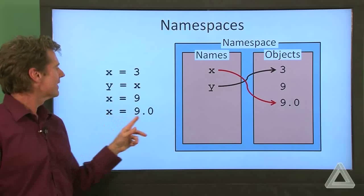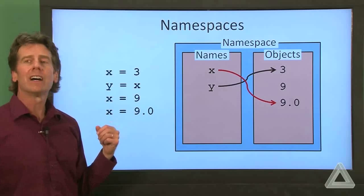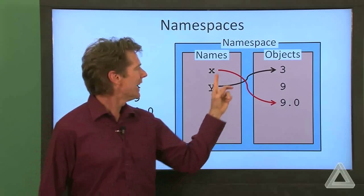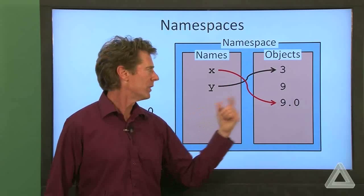Now in Python, I can assign x a float value of 9.0. And now it points to that float value of 9.0.